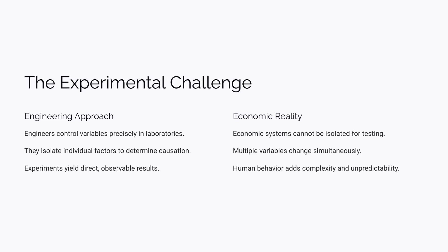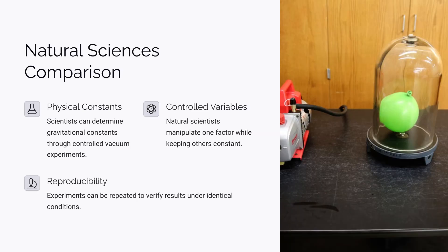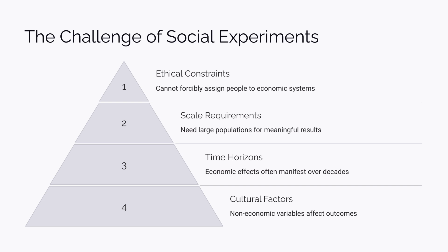The reason empirical economics exists is that experiments are fundamentally impossible in economics. Economists are often more adept in statistics than engineers — because engineers can conduct experiments, so they don't need deep statistical analysis. They can control variables perfectly by changing one variable at a time in a controlled environment. Natural sciences also have some constraints, but they can conduct experiments. For example, to determine the gravitational constant or air resistance, we can experiment in a vacuum or with varying air densities. But in economics, social experiments are difficult.